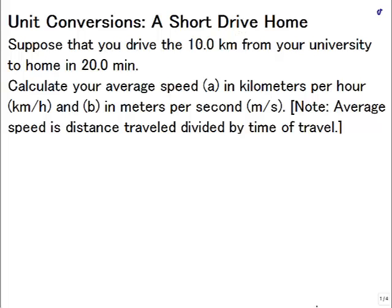So it says, suppose that you drive 10 kilometers from your university to home in 20 minutes, calculate your average speed in A, kilometers per hour, and B, meters per second. And it says, note, average speed is distance traveled divided by the time of travel.